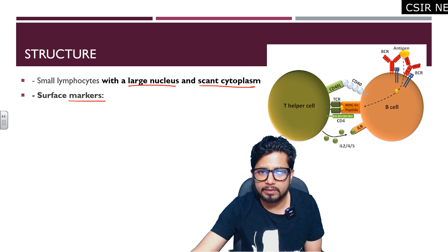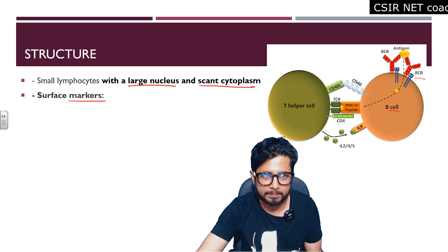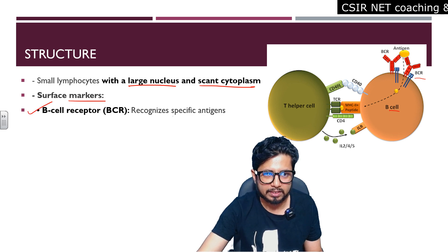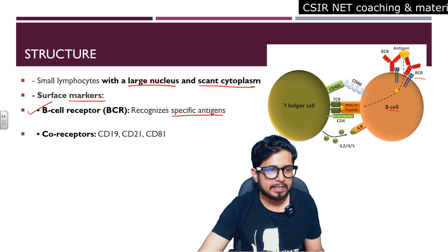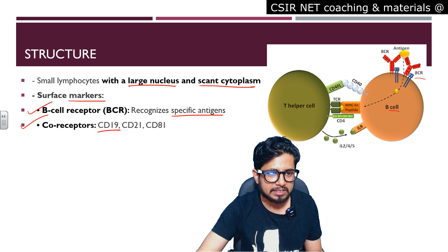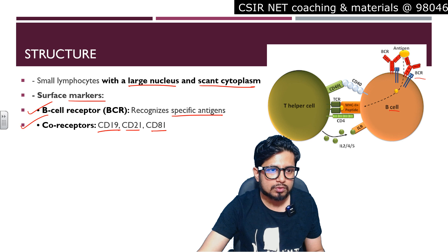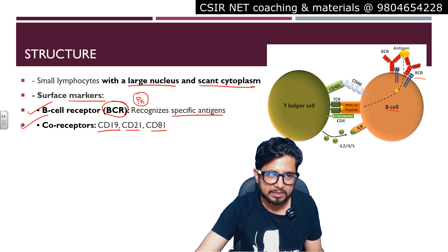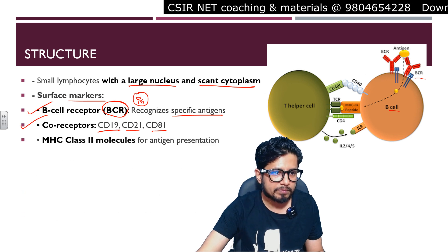Here you can see a T helper cell on the left and a B cell on the right. The B cell has the BCR — B cell receptor — which is the very first surface marker, recognizing specific antigens. BCRs are essentially antibodies. The coreceptors that a B cell has are CD19, CD21, and CD81. The BCR is the primary receptor, but the B cell also needs these coreceptors.